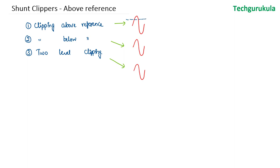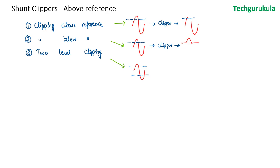Let's take a reference value — a reference voltage. As the name indicates, above the reference should be clipped. If we use a clipper, the output waveform would have the portion above the reference clipped. For clipping below reference, the waveform clips any value below that reference. For two-level clipping, clipping is done above one reference level and below another reference level.